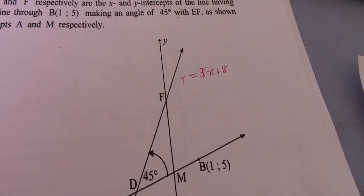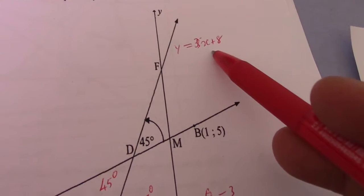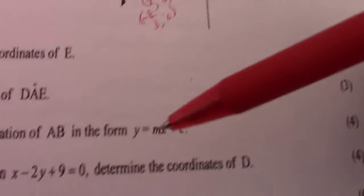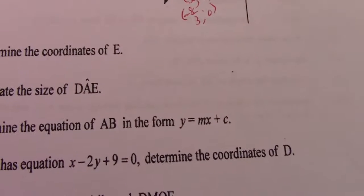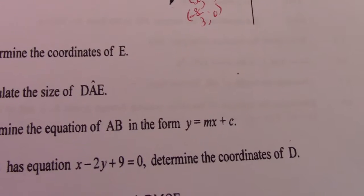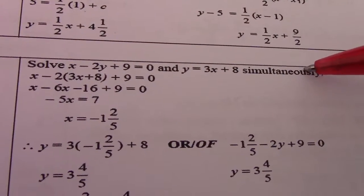So as I said, T is a point of intersection. That is where the graph y equals 3x plus 8 meets up with the graph x minus 2y plus 9 equals 0. We make the two equations equal and we solve. So we solve x minus 2y plus 9 equals 0 and y equals 3x plus 8 simultaneously.